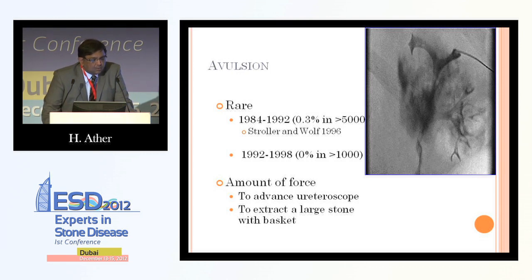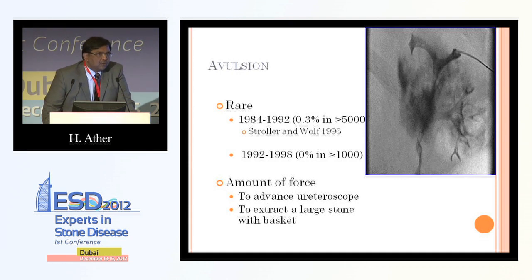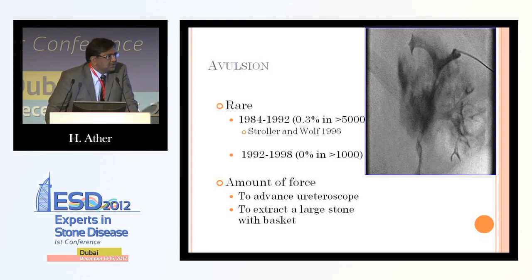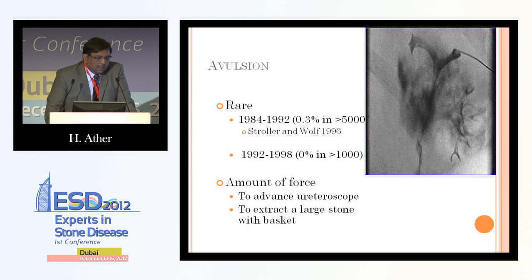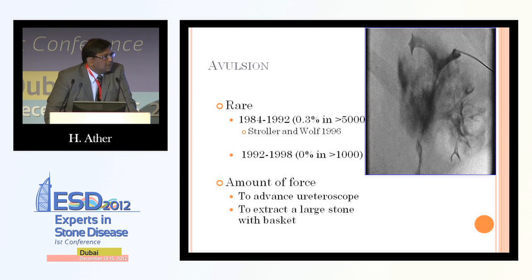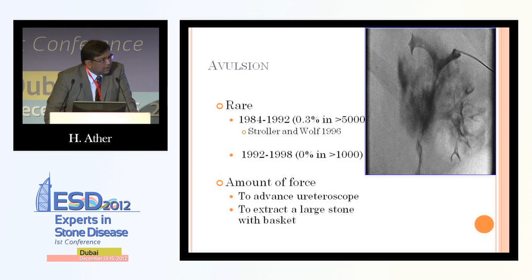It's quite obvious to all of us doing large numbers of ureteroscopies that ureteral avulsion injury has almost disappeared, fortunately. Why did it used to happen? There are just two reasons: advancing the ureteroscope with a force beyond what the ureter can handle, or trying to extract a stone grabbed in a basket that is too big for the ureter.